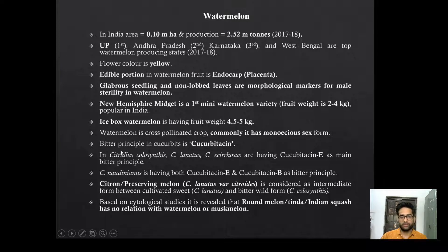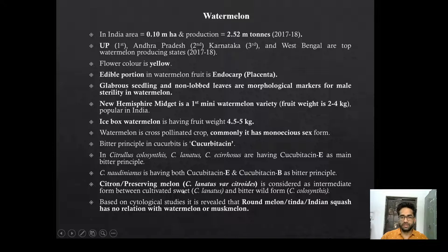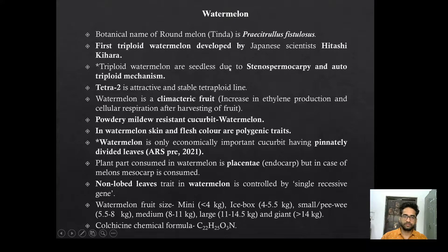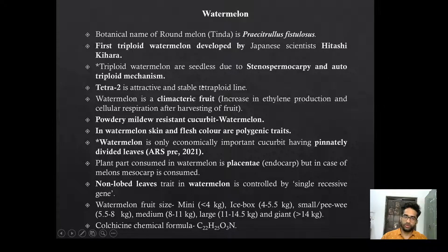Bitterness of Cucurbits is due to cucurbitacin. Citrullus lanatus var. citroides is considered an intermediate form between the cultivated and wild type of Citrullus colocynthis. In watermelon cytological studies it is revealed that round melon (tinda) is not related to watermelon or muskmelon. The botanical name of round melon is Praecitrullus fistulosus. The first triploid watermelon was developed by Japanese scientist Hitoshi Kihara. The triploid watermelon is seedless due to stenospermocarpy or autotriploid mechanism.